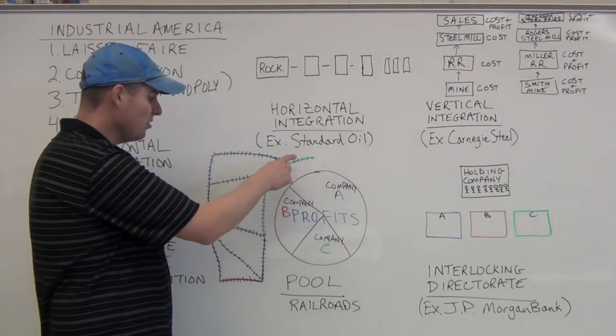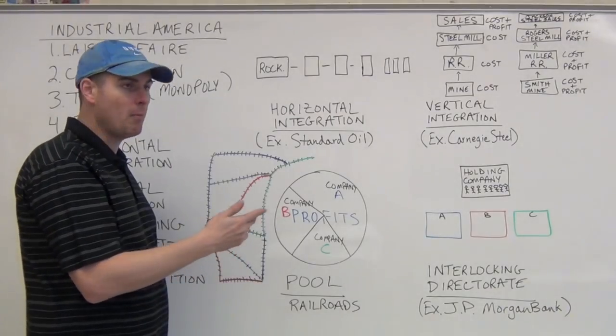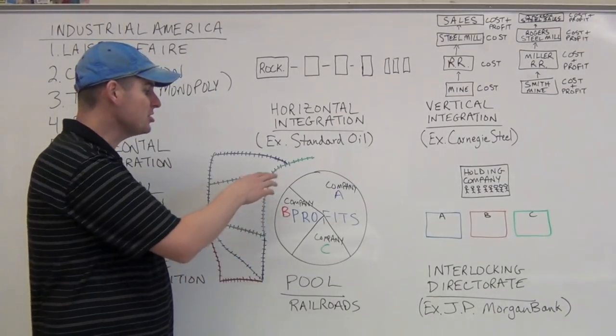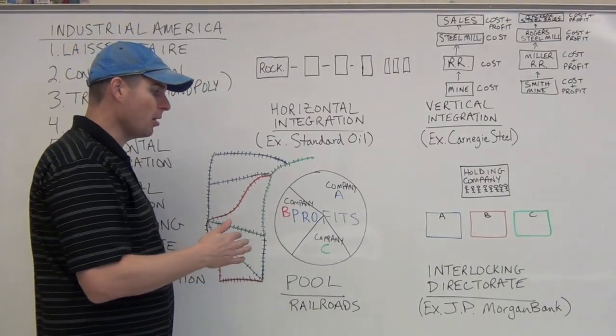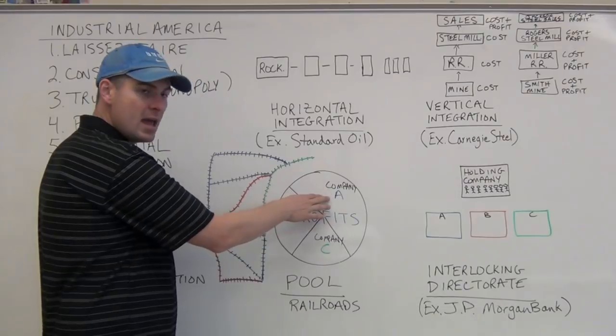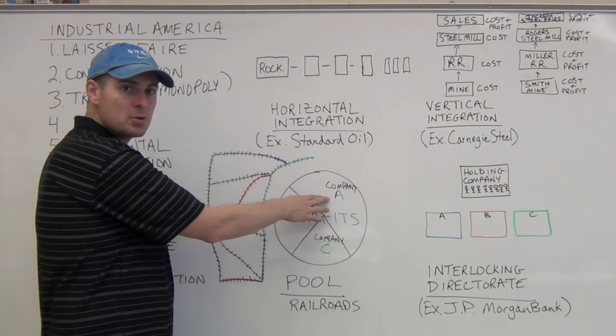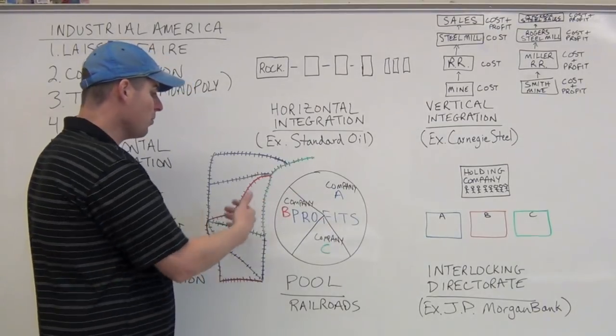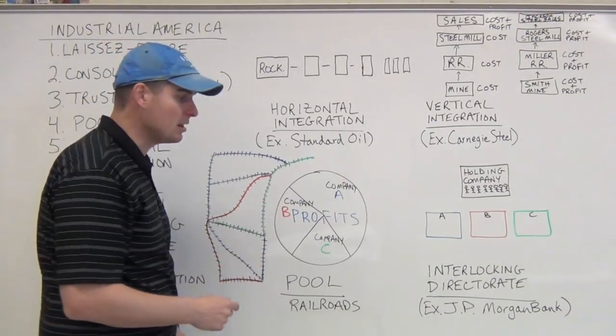Well, a pool would be companies A, B, and C get together, and they decide they will just share by mile of track. They would share, basically, all their profits divided up on a comparison. Company A has more miles of track, so they would get a larger percentage.